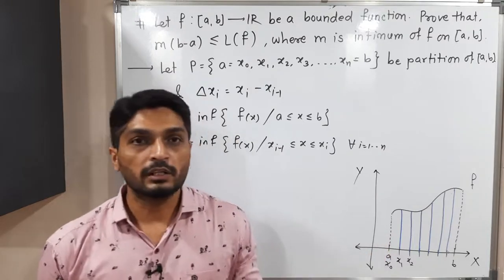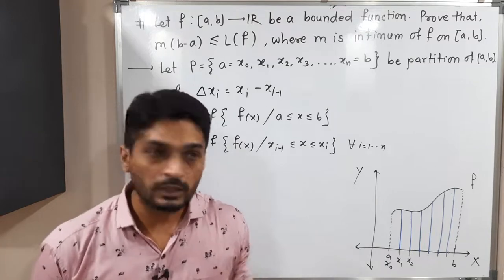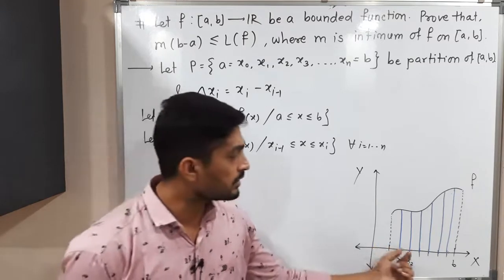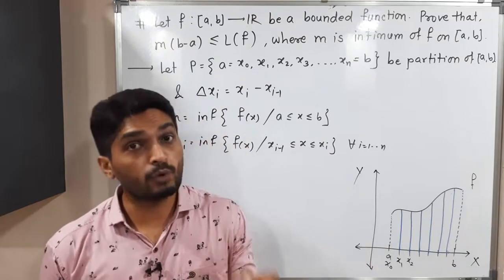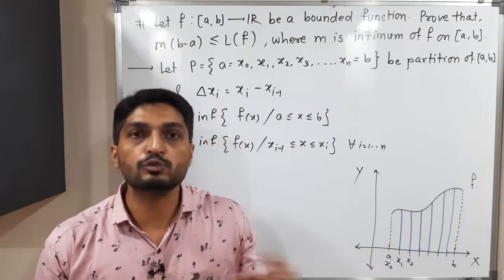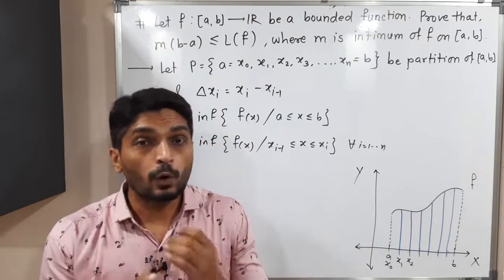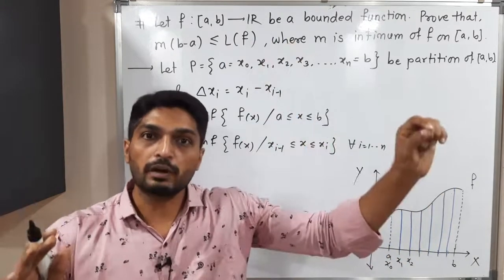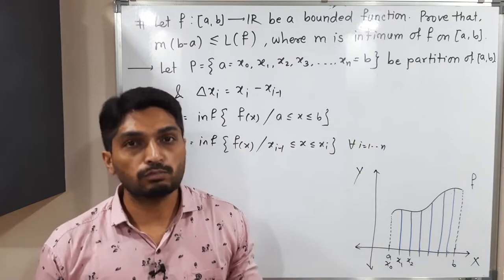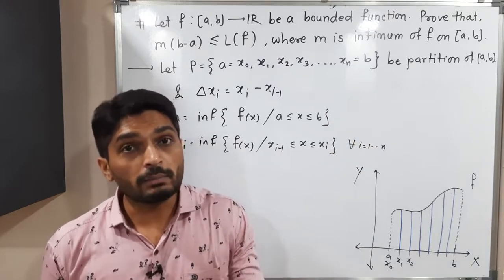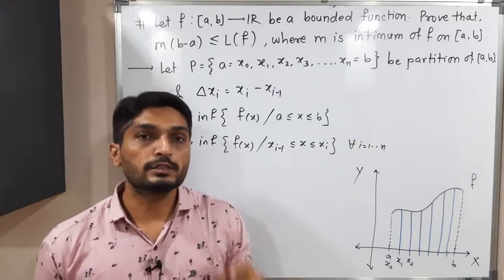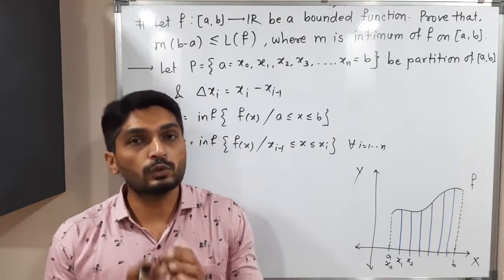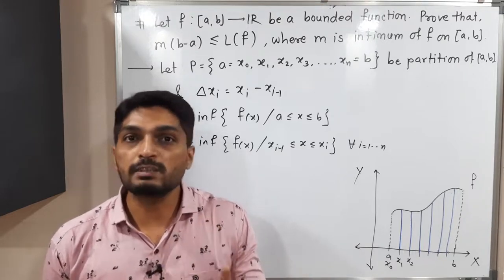So for the first sub-interval the minimum value is m₁, for the second it is m₂, for the third it is m₃, and so on. Small m is the global minimum over [a, b], while mᵢ is the local minimum on each sub-interval. We know that global minimum is always less than or equal to local minimum.